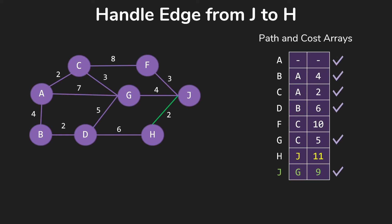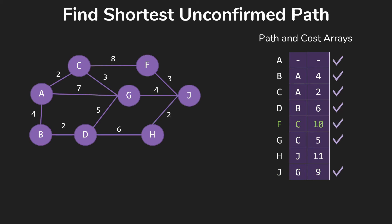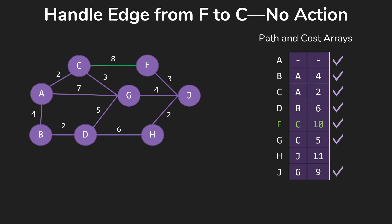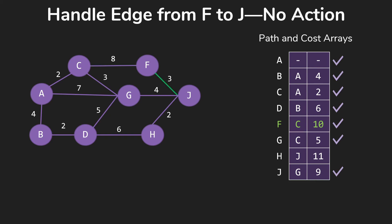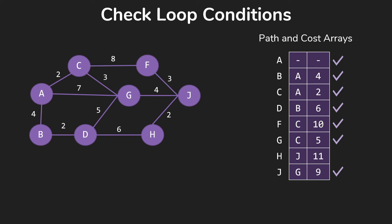And that was all our edges out of J. We check our loop conditions, still not done. So the next path we're going to deal with is the one to F for 10. The edges out of that aren't going to make any changes, we've already got C, we've already got J.